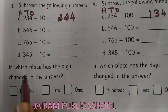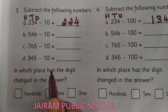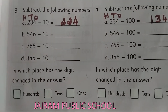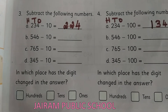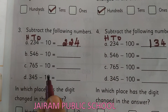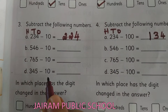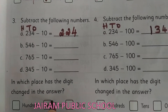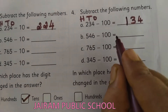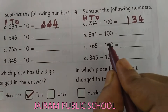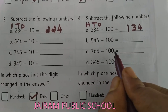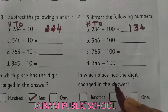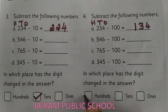See here, Kanna — in which place has the digit changed in the answer? In which place is the digit changed? Yes, very good — 10s place. Here we are subtracting 100, so subtracting 100 means the digit changed in the 100s place. Super, Kanna!